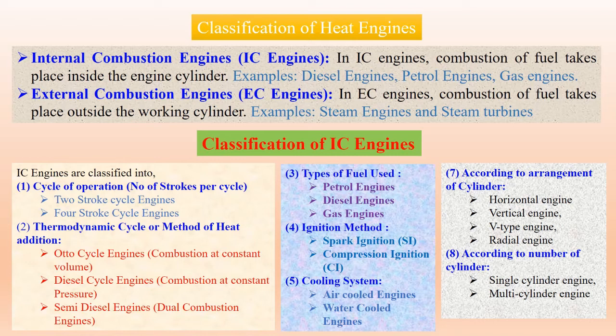The third classification is the type of fuel used: petrol engine, diesel engine, and gas engine. Nowadays, biodiesel is also used as a working fluid. Fourth is ignition: spark ignition and compression ignition engines. Fifth is the cooling system: air-cooled, water-cooled, and liquid cooling systems used in modern cars. Sixth is cylinder arrangement — horizontal, vertical, V, radial, opposite, and inline. Finally, classification by number of cylinders: single-cylinder and multi-cylinder engines.